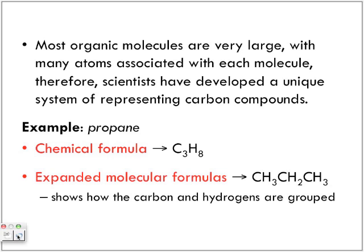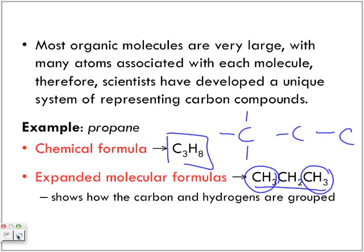We can also come up with something called an expanded molecular formula, and these show how the carbons and hydrogens are actually grouped together. If we look at the chemical formula C3H8, we don't know really how the bonds go. But showing it as an expanded molecular formula tells us that we've got three carbons bonded to one another, where the outer carbons contain three hydrogens around them, which leaves the middle carbon allowing only for two more bonds to the hydrogens. Notice how each carbon has the ability to form up to four bonds because of the four valence electrons.